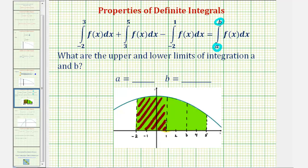Notice how this leaves the area under the function above the x-axis on the interval from one to five, and therefore the lower limit of integration, a, would be equal to positive one, and b, the upper limit of integration, would be equal to positive five.